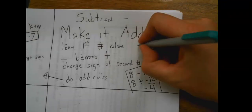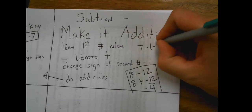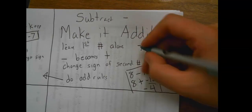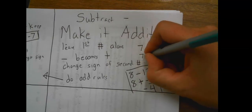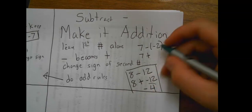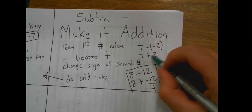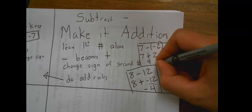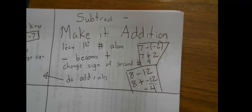One more example here. Seven minus negative two. Minus becomes a plus. The negative two becomes a positive two. Seven plus two is nine. That's the second example.